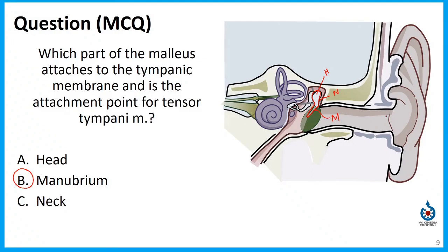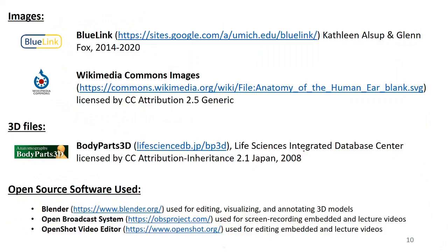So the muscle that attaches to the stapes does so where? That muscle projects from the posterior wall toward the stapes and attaches to the neck — and that's the stapedius muscle. Awesome, great job. That's everything for this video. Thank you for joining me, and please let me know if you have any questions at all.